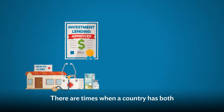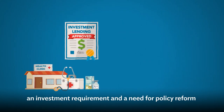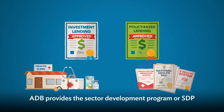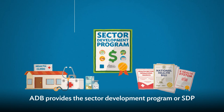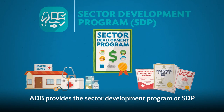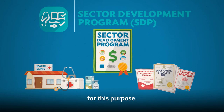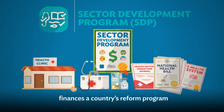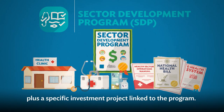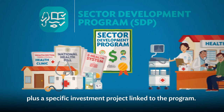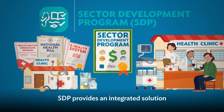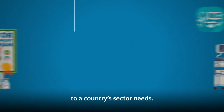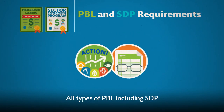There are times when a country has both an investment requirement and a need for policy reform in a given sector. ADB provides the Sector Development Program, or SDP, for this purpose. This combined modality finances a country's reform program plus a specific investment project linked to the program. SDP provides an integrated solution to a country's sector needs.